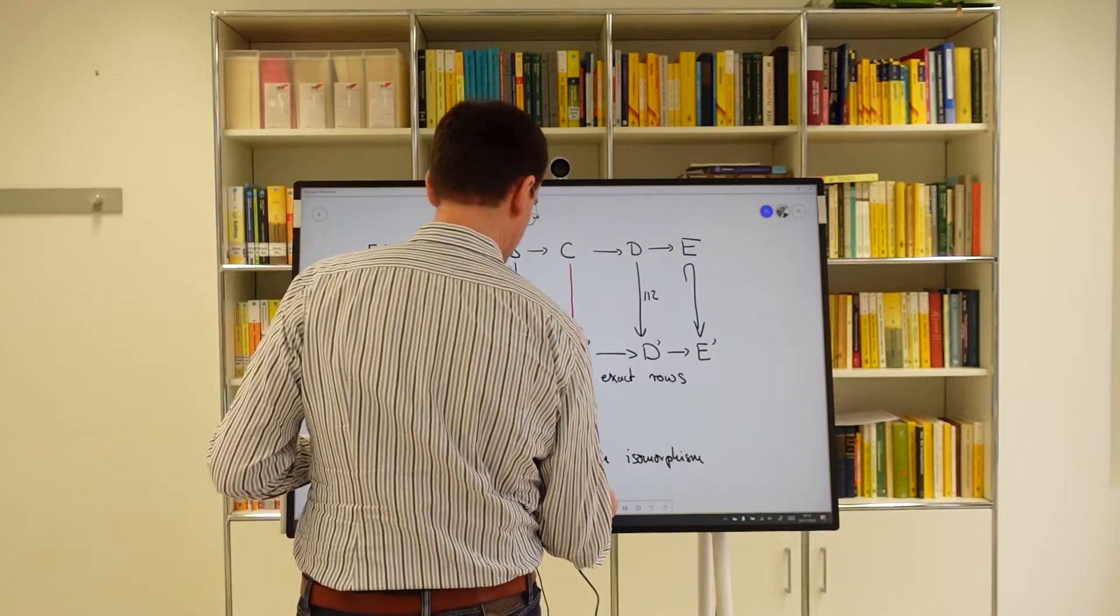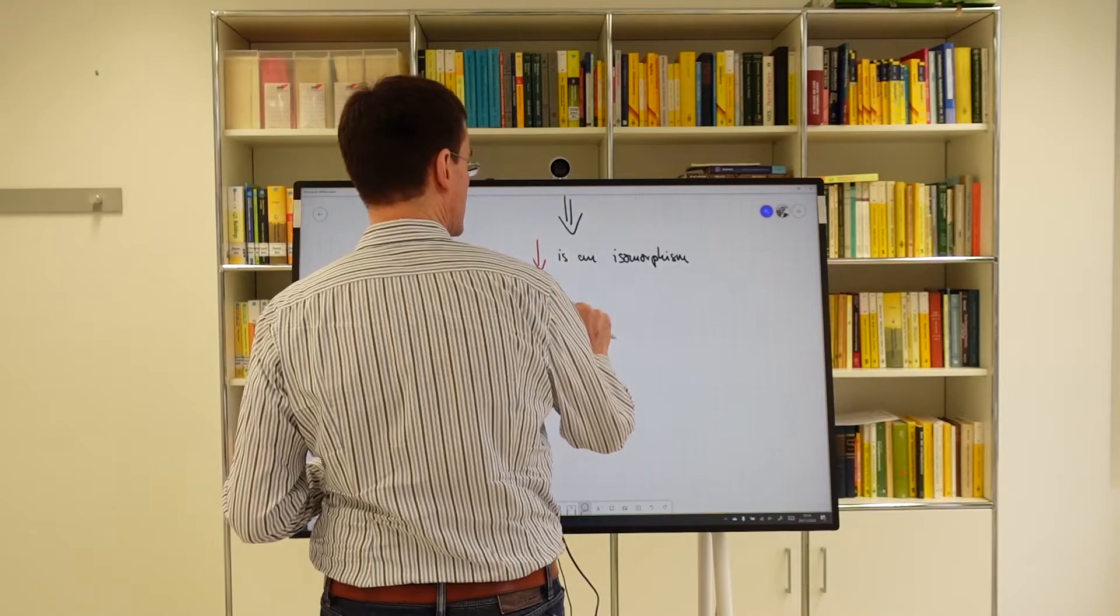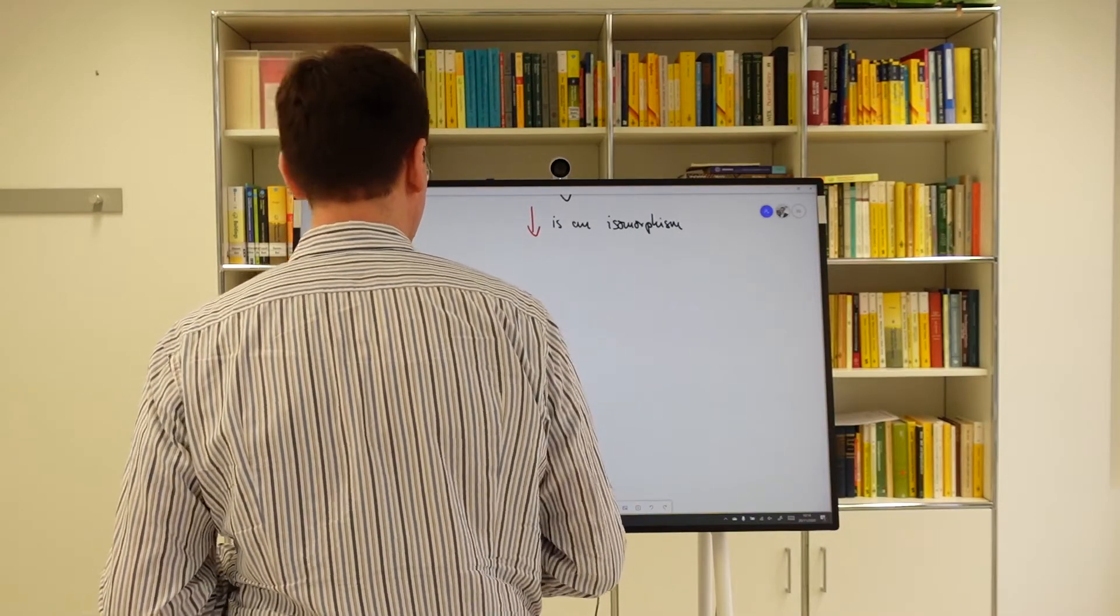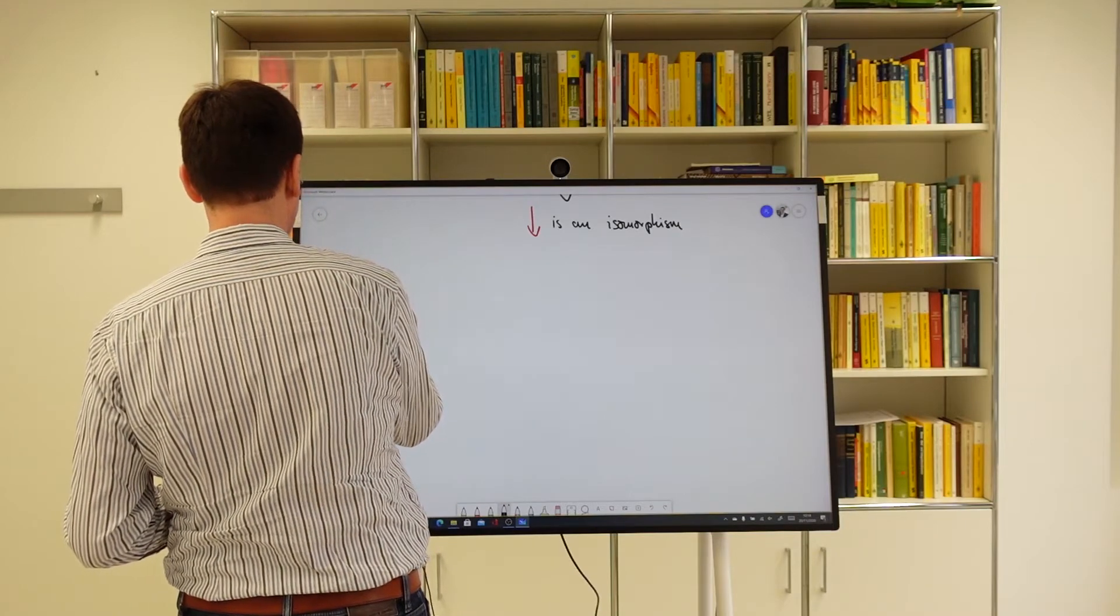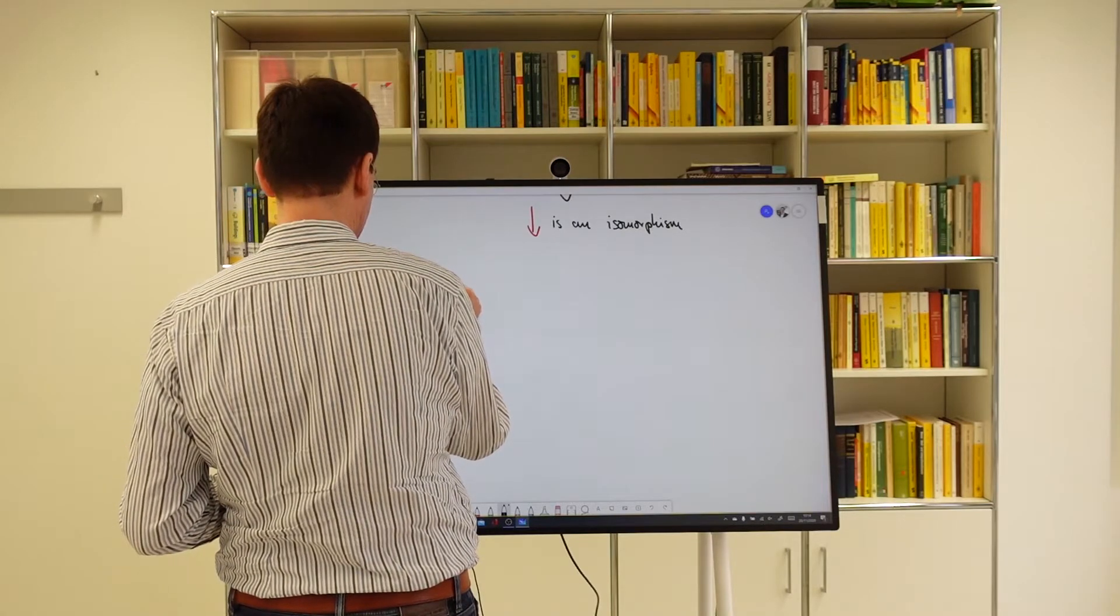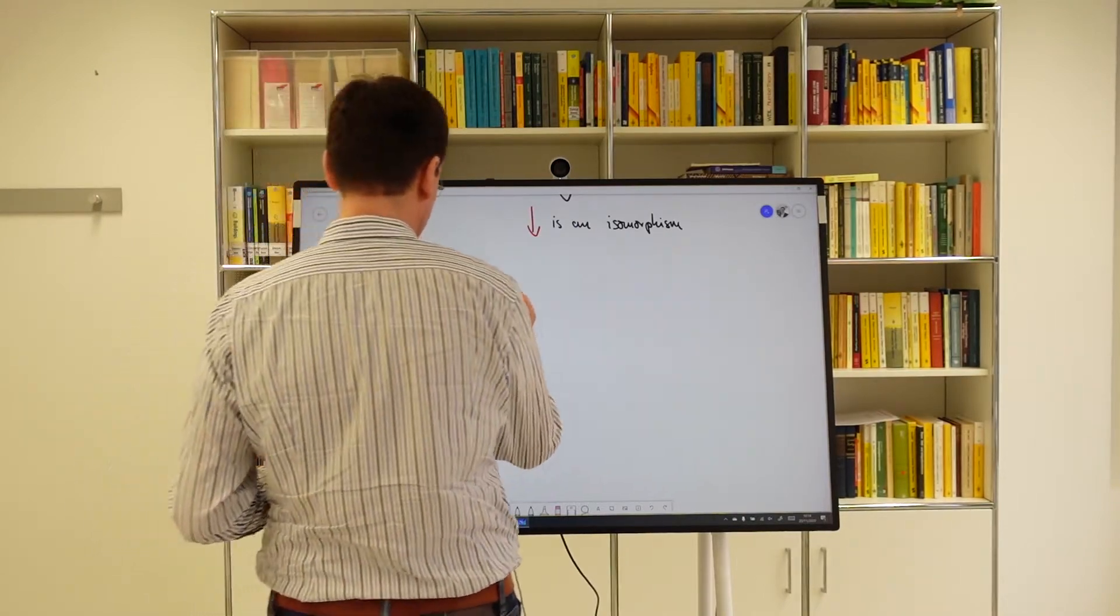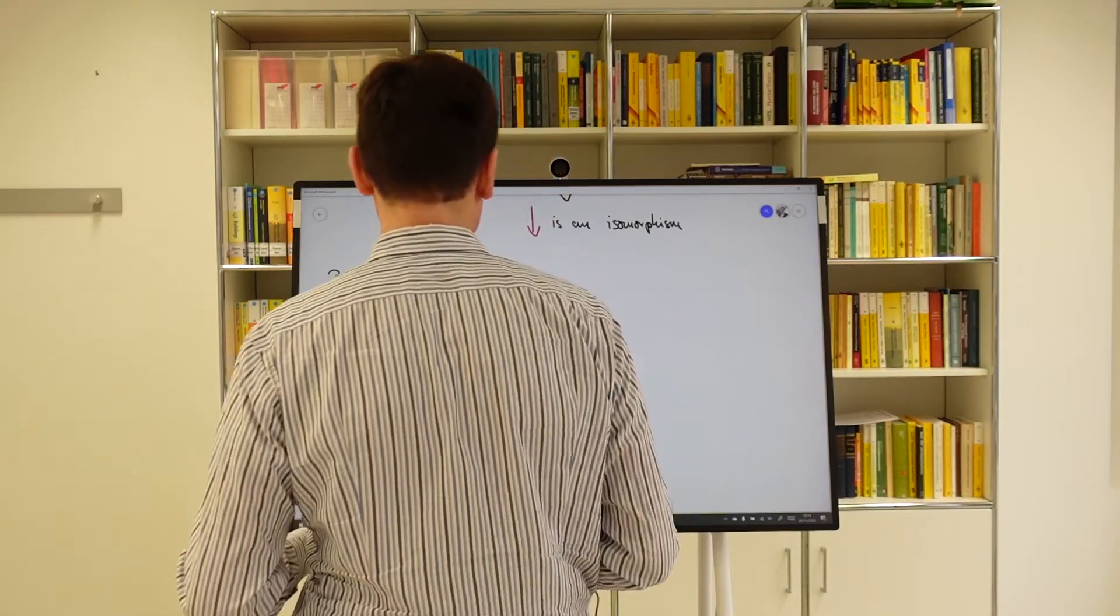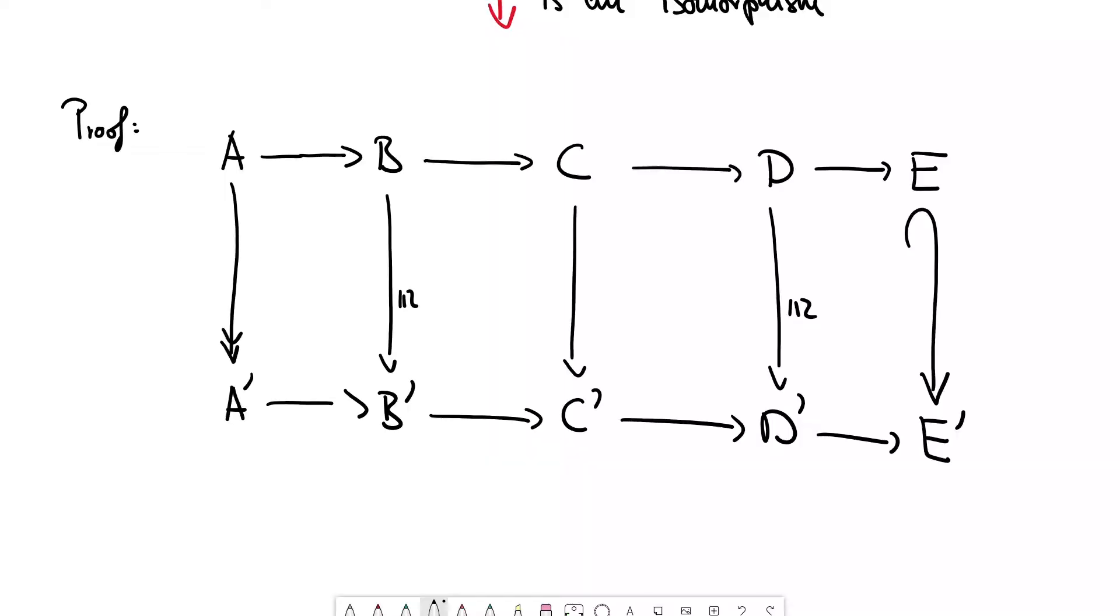And for that, we start by drawing the diagram again and giving us an arbitrary element in C prime. So, the proof is something called diagram chase, and a diagram chase is a proof that doesn't involve a lot of text. It mainly involves us moving around in the diagram. The hooked arrow indicates the injectivity, the double headed arrow indicates the surjectivity. Okay, let's give us an element in here, and we indicate an element in C prime by this gray dot. Our task is to find a pre-image in C.